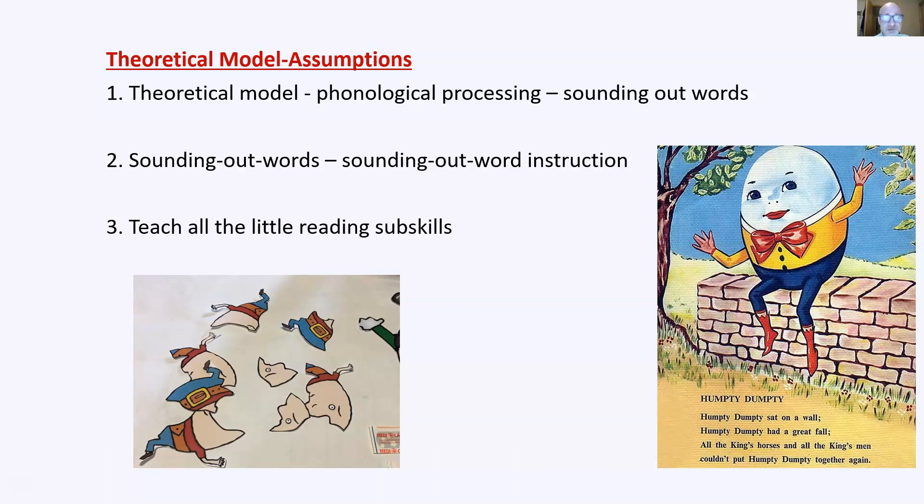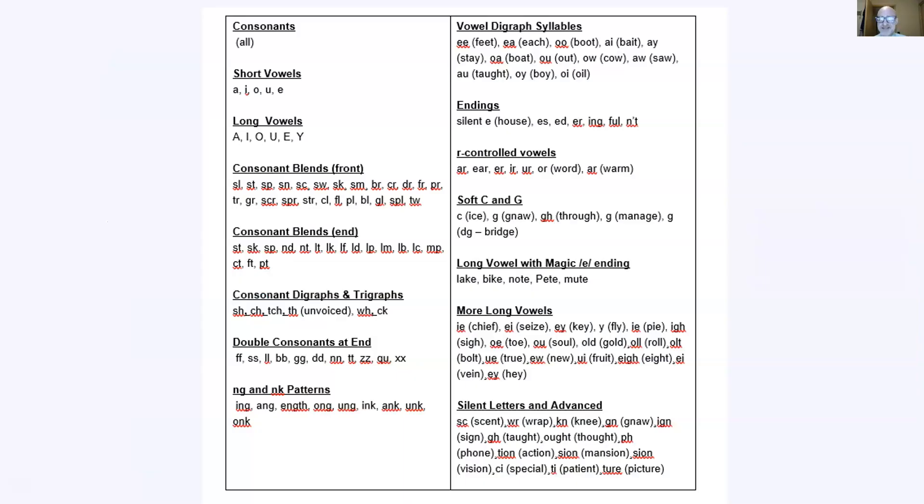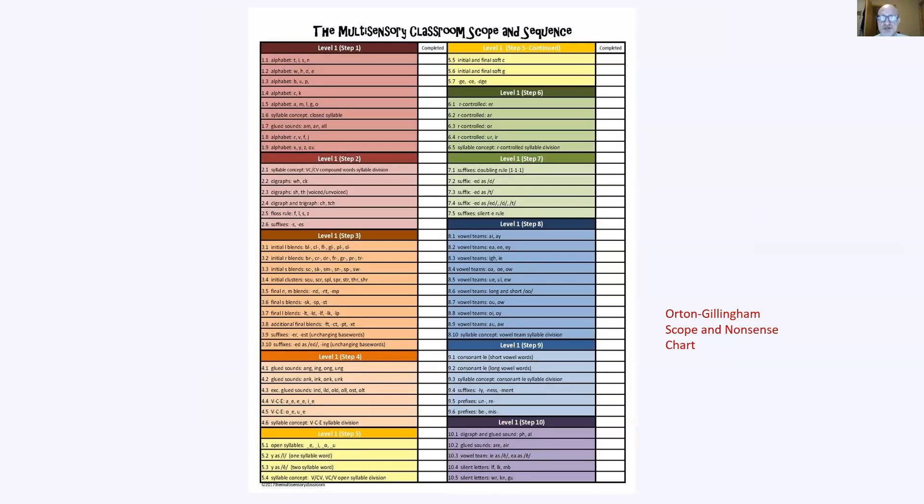However, all the king's horses and all the king's men simply could not put Humpty together again. Here's this Humpty Dumpty idea that you teach each one of these little bitty teeny parts and you make sure students master every one of these little teeny parts and you assess every lesson to make sure they do it. And when they have mastered all these little tiny parts and put it together, then they'll be able to read. That's how it occurs.